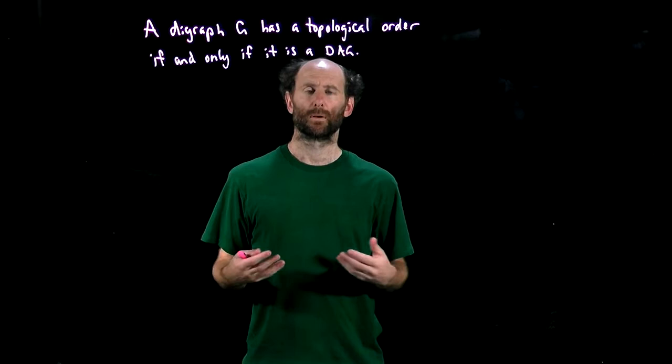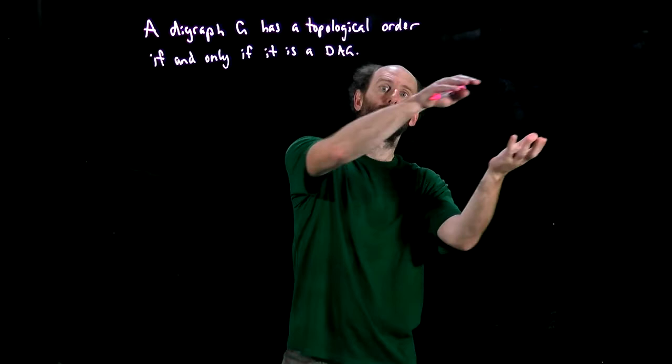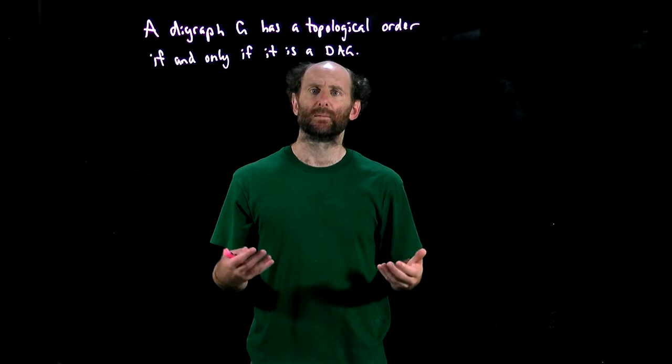Clearly if a digraph has a topological order it has no cycle since we can draw it out in a line with all the arrows going in one direction. If it had a cycle, it would have to have at least one arrow going the other way, which it doesn't. So we only need to prove that if G is acyclic it has a topological sort.